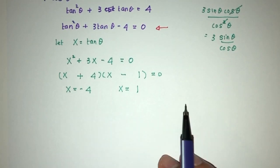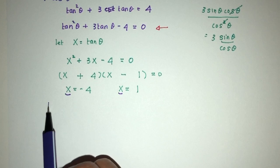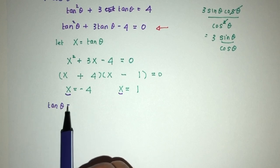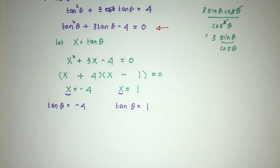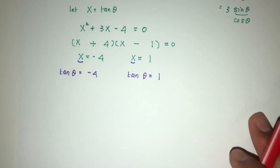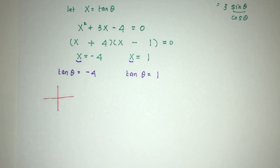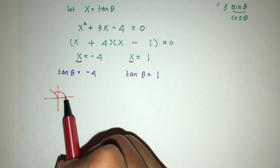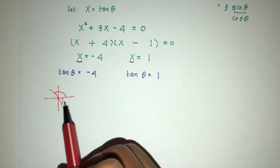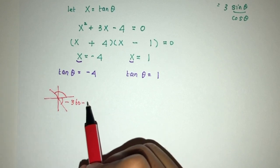So we have two values to look for. We're not trying to find x, we're trying to find θ. So we know tan θ = -4 and tan θ = 1. For this one, it's negative, so when tan is negative, it will be in your second quadrant and your fourth quadrant. This will be 360 minus x, and that will be 180 plus x.